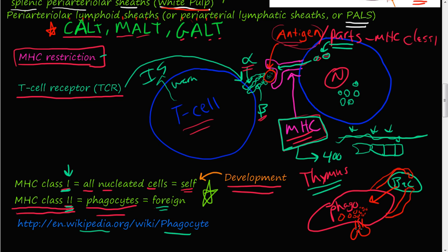Those digested bacterial fragments are then displayed on the phagocyte's MHC class 2 complex. This is a foreign antigen. T cell receptors on T cells will come up and interact with these phagocytes. They signal the immune system: if you encounter anything that resembles this antigen — this bacteria's surface components — it's foreign, destroy it. Your body will destroy anything that looks similar.